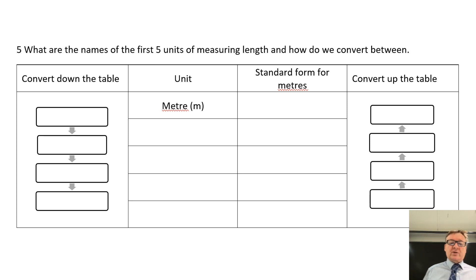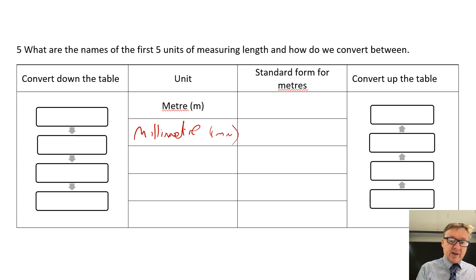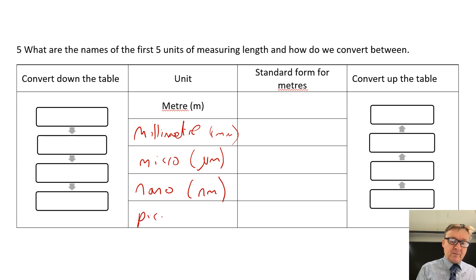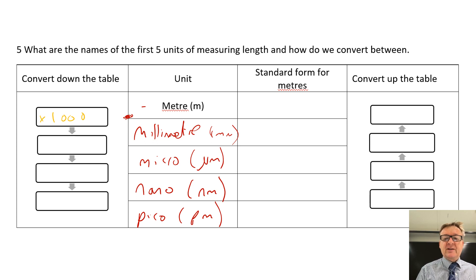Question number five: the names of the first five units of measuring length and how we convert between them. We go metre, millimetre (mm), then micro (µm), then nano (nm), then pico (pm). We miss out centimetres. If you're going to convert from metres to millimetres, you times by a thousand, because there's a thousand millimetres in a metre. The next step is times by a thousand, the next is times by a thousand, and the next is times by a thousand.